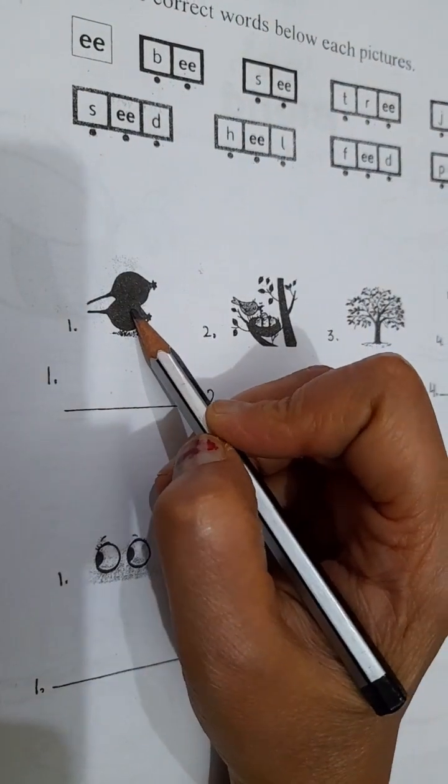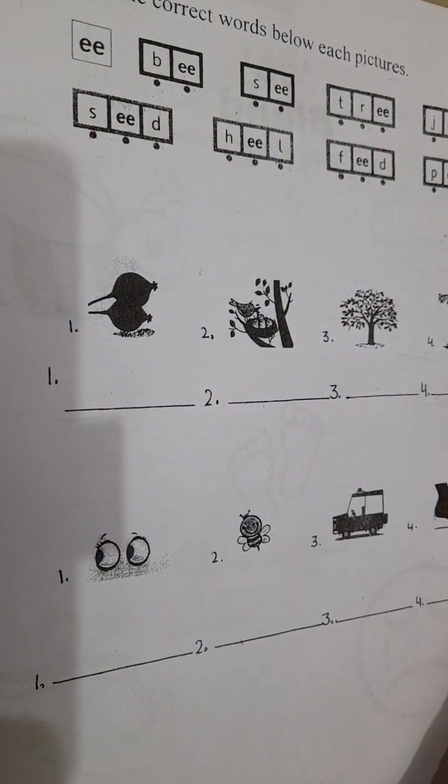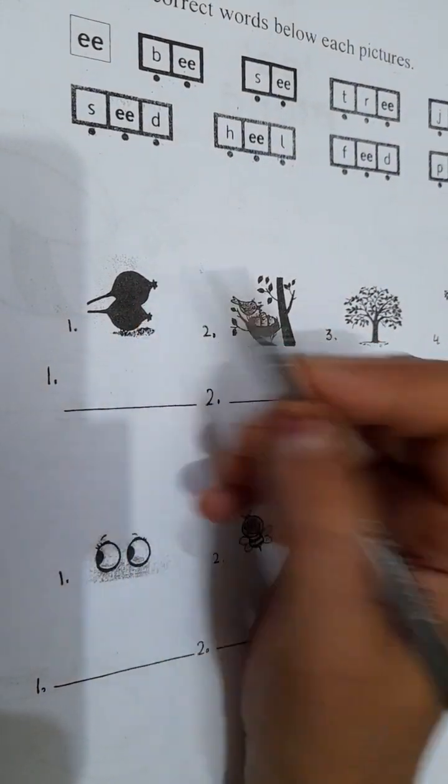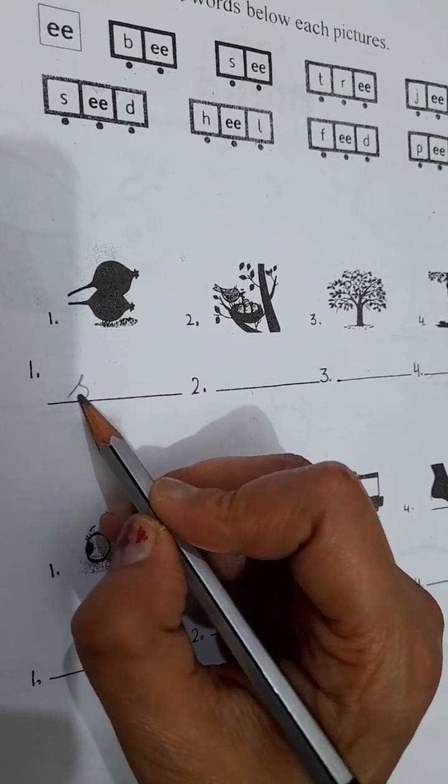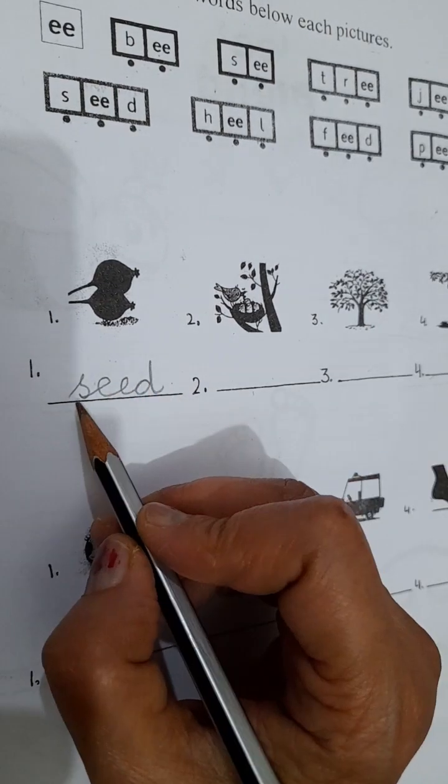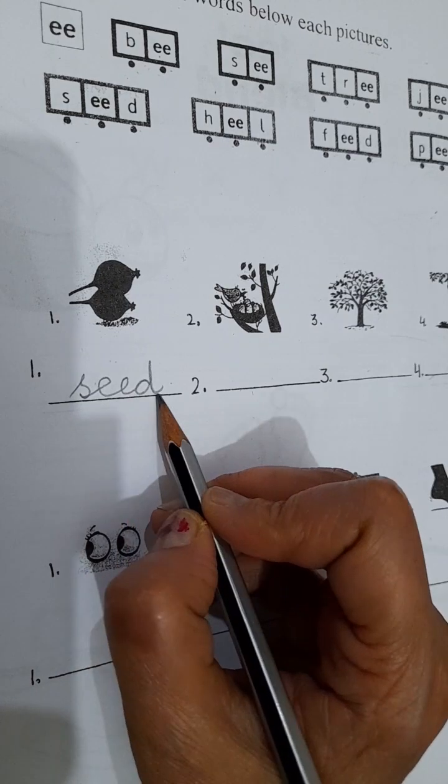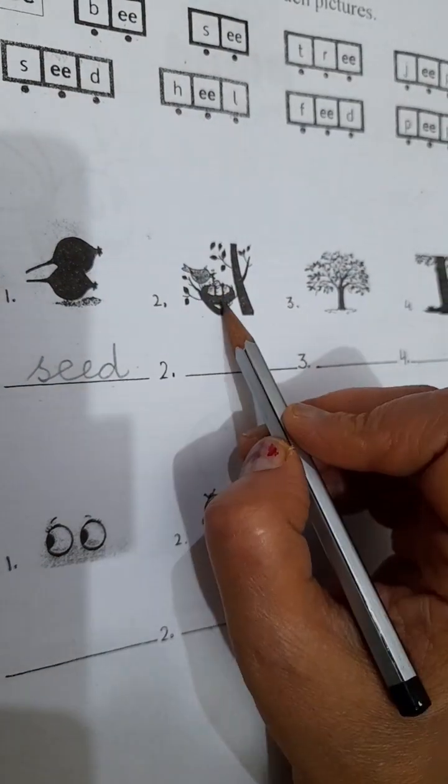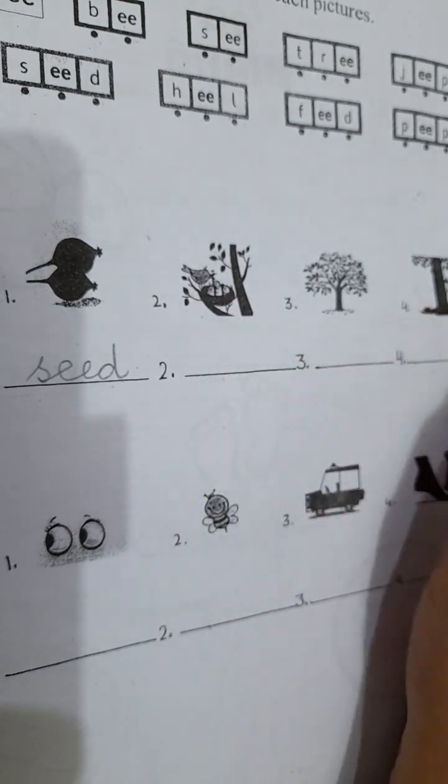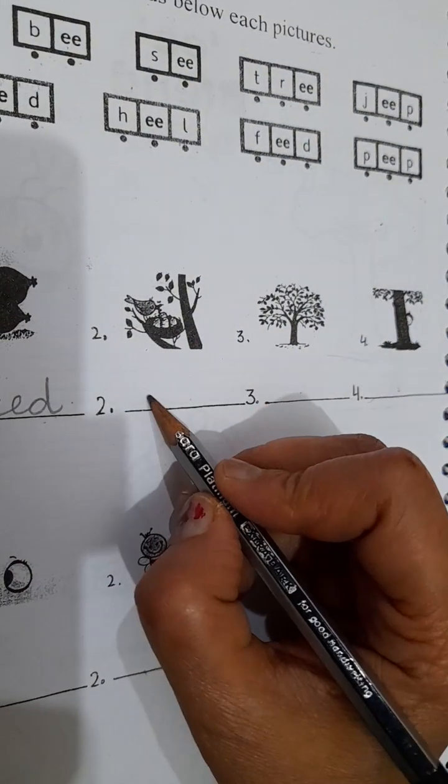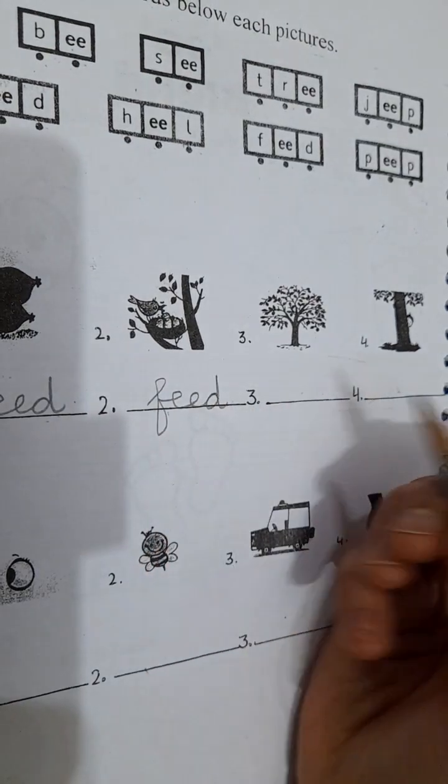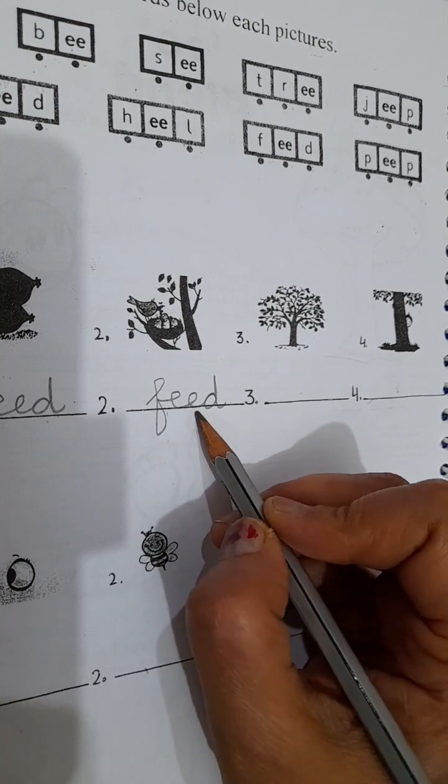So, what picture is this? I think seed. Seed. Seed. Seed. Seed. And the mother is feeding her chicks. The mother is feeding her babies. Feeding. Feed. Feed.